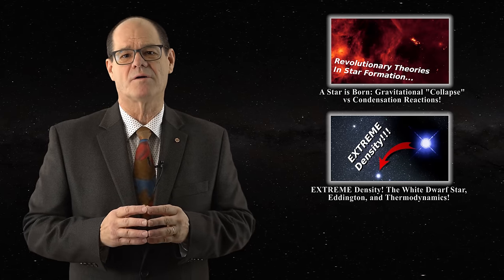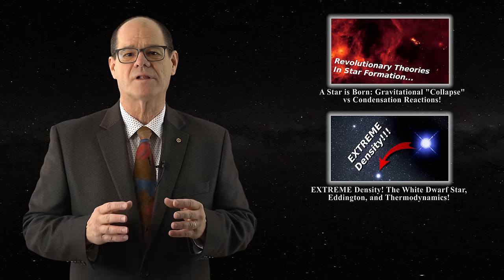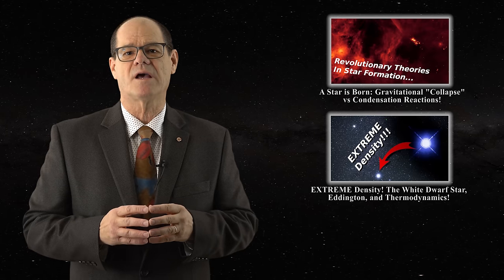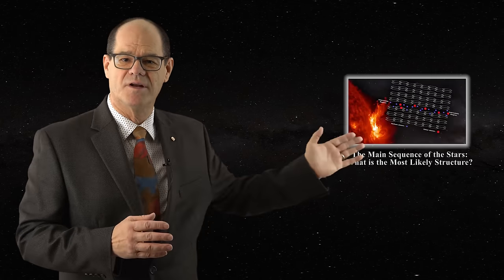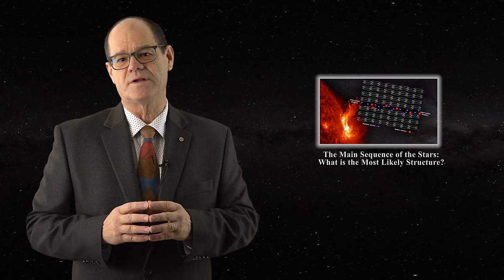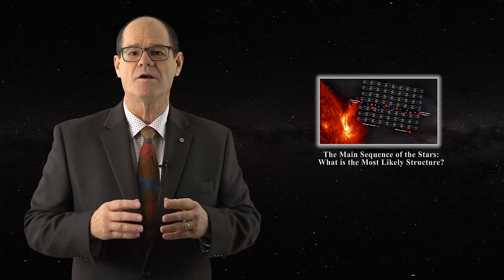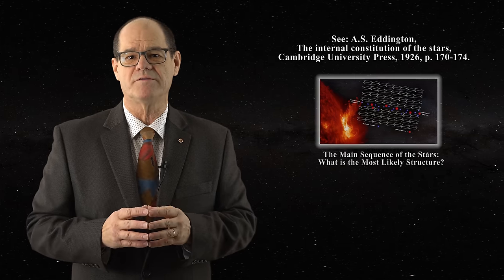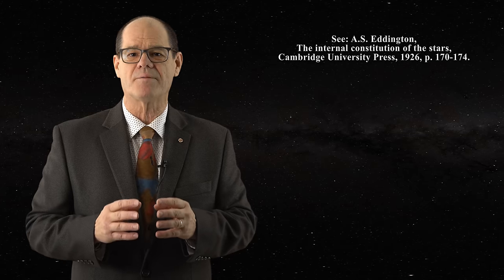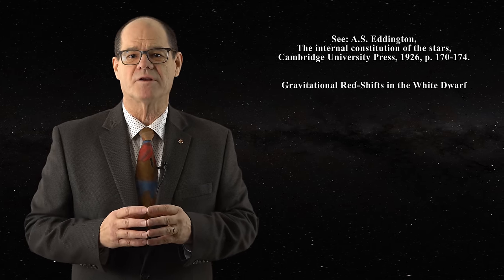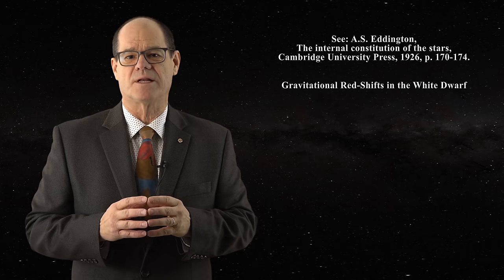A hydrogen-based star with a diamond-like photospheric lattice would be expected to have lower luminosity than a main-sequence star with a hexagonal planar photospheric lattice, as we saw in this video. However, Eddington's theory did not end with the derivation of the mass-luminosity equation. He also invoked general relativity and the fact that spectroscopic lines in the white dwarf should be gravitationally shifted if stars were indeed tremendously dense.